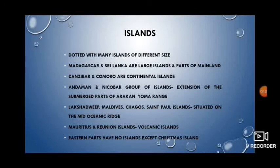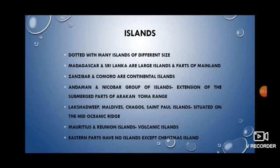There are many small and big islands in the Indian Ocean. Madagascar and Sri Lanka are large-sized islands and are considered parts of the mainland. Zanzibar and Comoro are small continental islands. The Andaman and Nicobar group of islands is the extension of the submerged part of the Arakan Yoma range of Myanmar. Lakshadweep, Maldives, Chagos, and Saint Paul Rouge are important islands situated on the Mid-Indian Ocean Ridge.